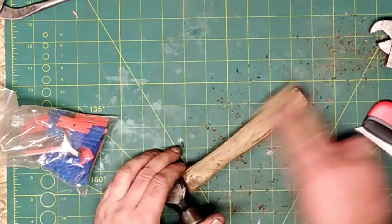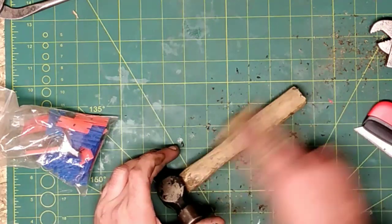I'm using 320 grit sanding paper here because the handle's in condition, it just needs to smooth off.